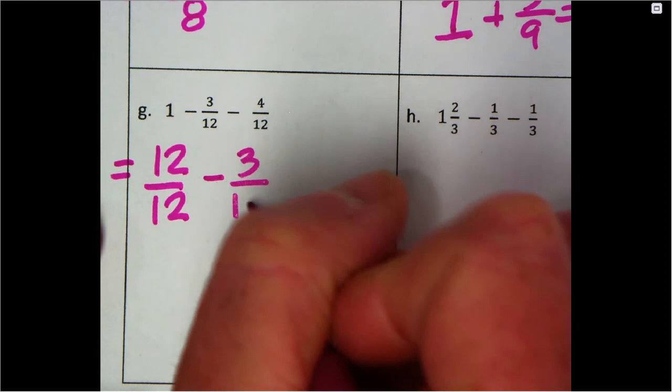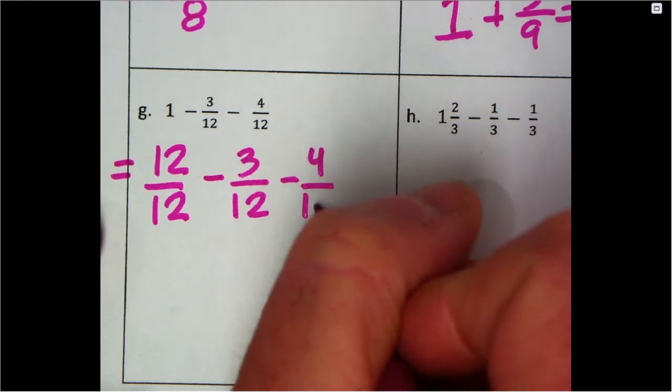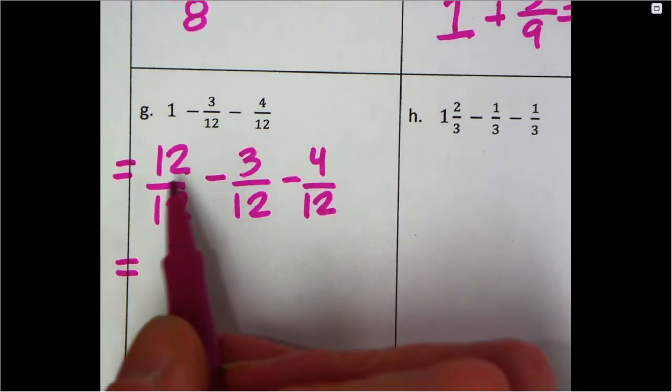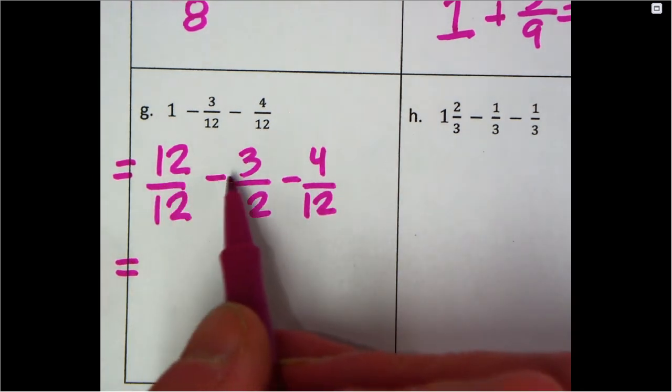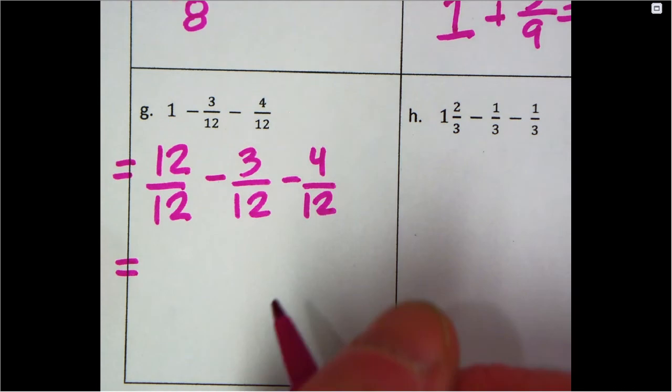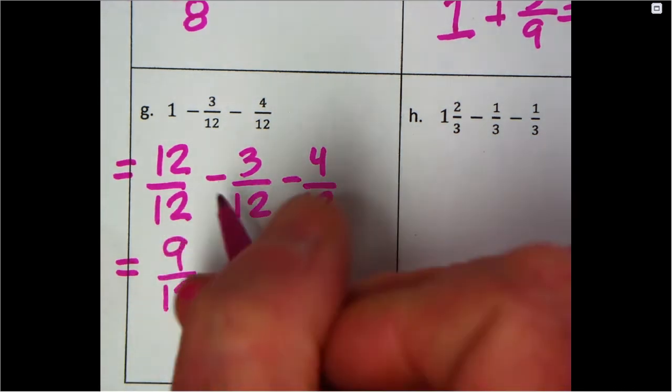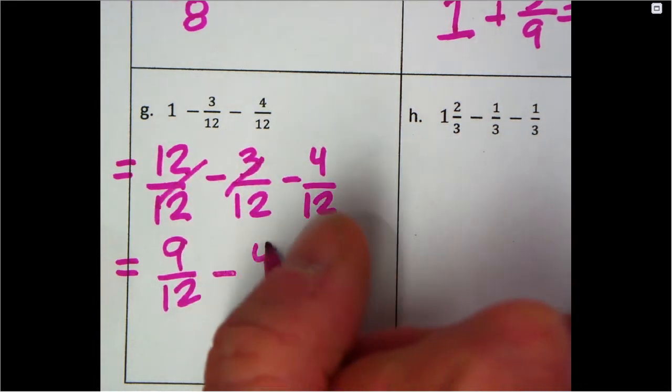What will this equal? Let's think about it like this. Let's do the first one: 12 - 3 is 9/12. Now I just need to subtract the 4/12. What does it equal? 9 - 4 is 5. It's 5/12.